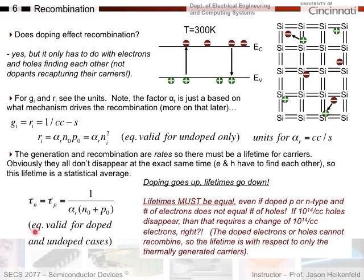This lifetime equation is valid for both doped and undoped cases. For n-type material with many electrons and very few holes, the lifetimes are still equal because only thermally generated carriers recombine — the doped carriers don't recombine. Every time you thermally generate an electron, you also create a hole, so thermally generated electrons and holes are equal in concentration. Since only these can recombine, their lifetimes must be equal.